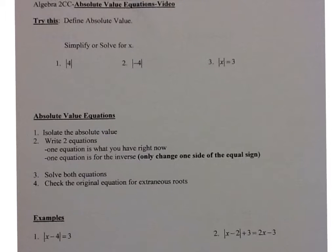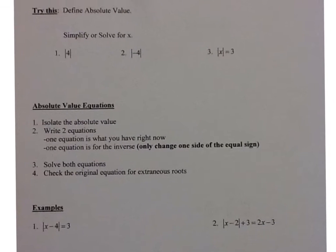What we're going to be solving today is absolute value equations. The first thing we need to know is the definition of an absolute value. The absolute value is the distance from zero to any number on the number line. Let's write that down — it's the distance from zero to a number on the number line.